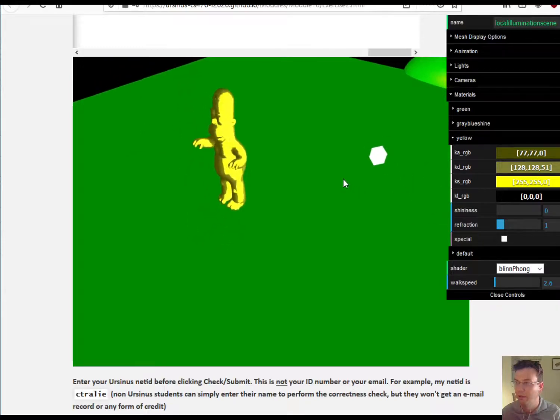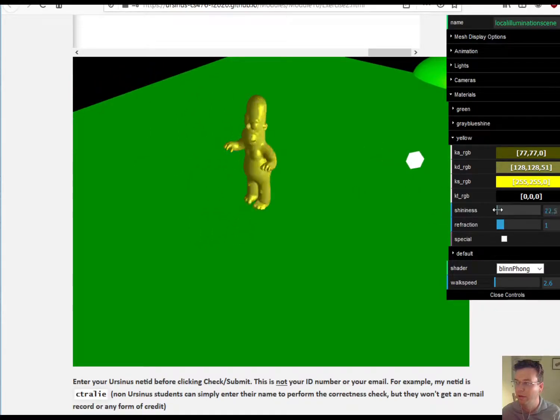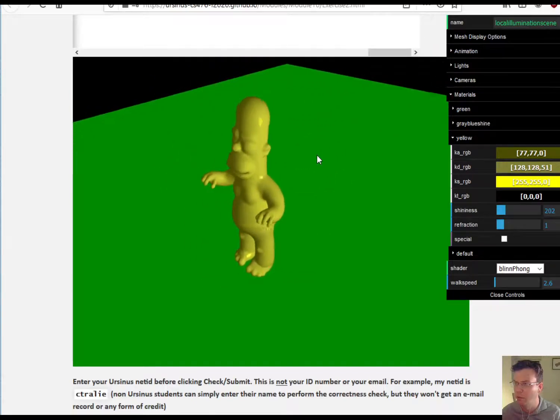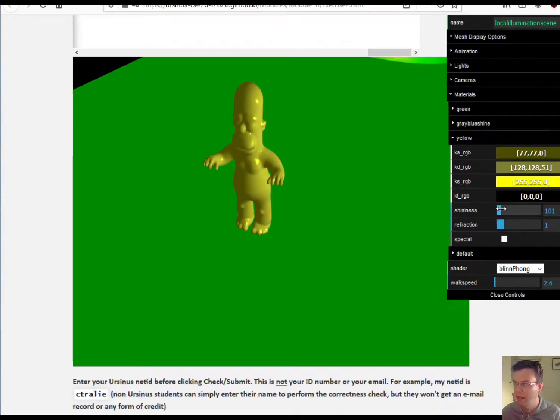So as this gets larger, these points of reflection get smaller because what it says, as this exponent gets larger, you have to be closer to the perfect angle in order to get a significant amount of reflection.